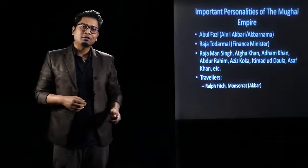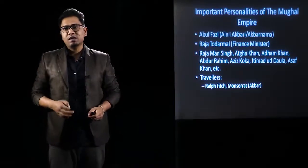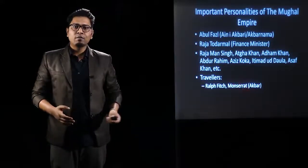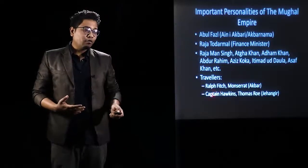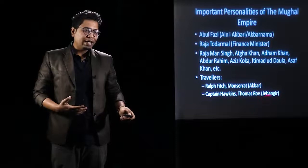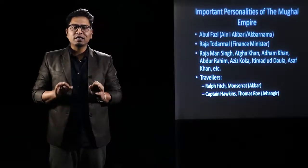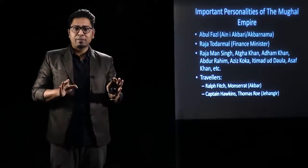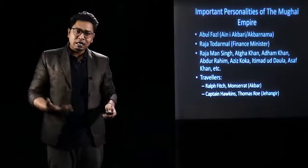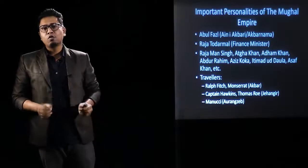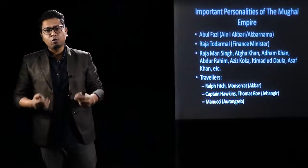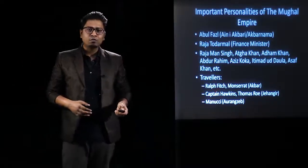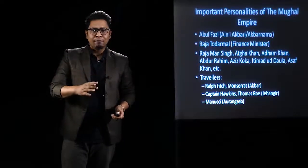Important travelers to the Mughal court must also be remembered along with their origins. Ralph Fitch was an English explorer who came during the reign of Akbar. Monsterat was a Portuguese Jesuit priest who also came during Akbar's reign and was part of his court. Captain Hawkins and Thomas Roe arrived during Jahangir's reign and were instrumental in establishing trading relations between the Mughals and the British. Manucci's texts help reconstruct the court history of Shah Jahan and Aurangzeb.